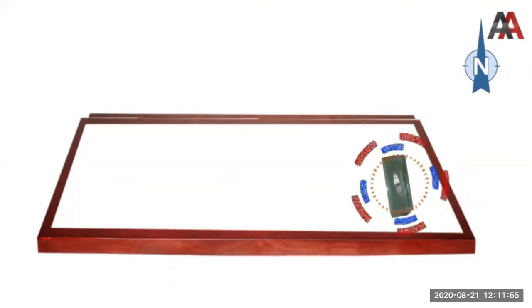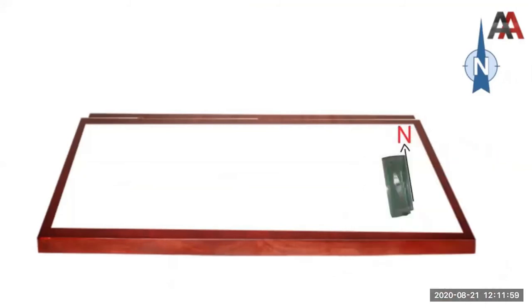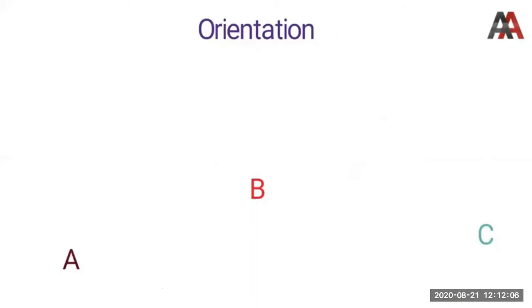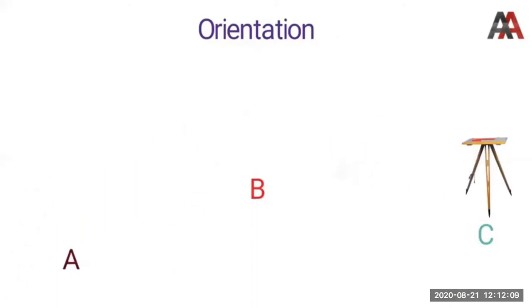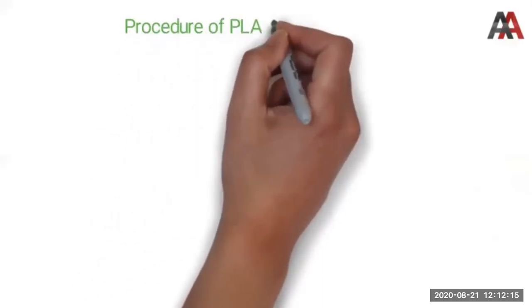When we don't know the north direction, we draw a line from the compass and the arrow will represent the north. Then we do the orientation. We always do orientation when we shift the table to two or more stations. If we are working from a single station, we don't need orientation.